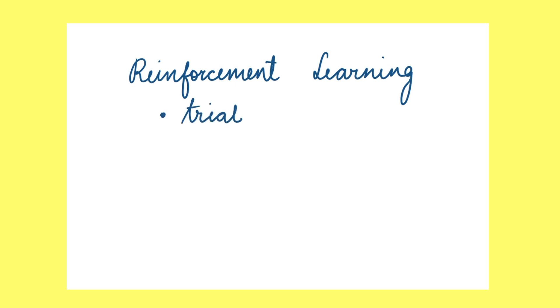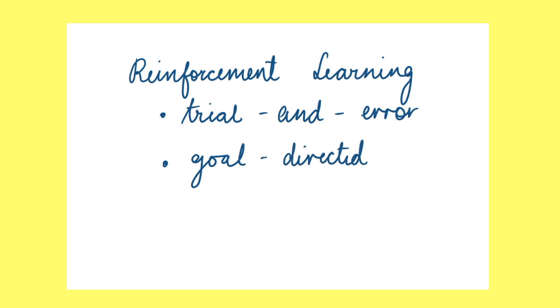To summarize: reinforcement learning refers to the set of algorithms that use trial and error to learn goal-directed behavior. The recent successes in reinforcement learning can be attributed to the use of deep neural networks to train reinforcement learning agents. Even though we've made a lot of progress this past decade, we still have a lot of issues that need to be resolved — but we leave that discussion for another time. Thank you for taking the time to watch this video. Hope you found this useful and see you again soon.